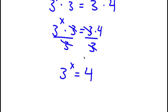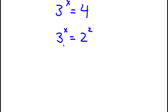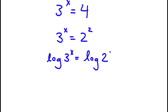Now, 4 is the same thing as 2 to the power of 2. So now I have 3 to the power of x is equal to 2 to the power of 2. I'm going to take the log on both sides, so I have log of 3 to the power of x is equal to log of 2 to the power of 2.